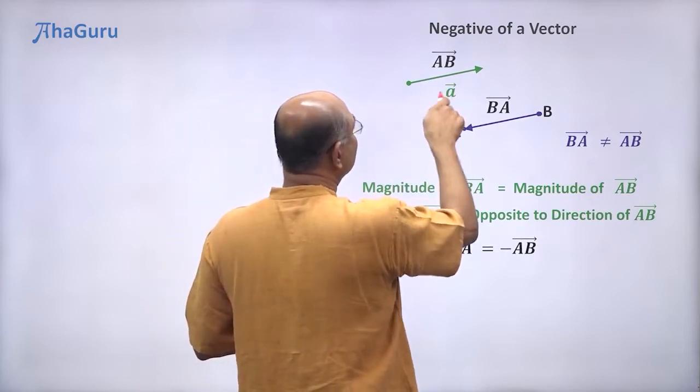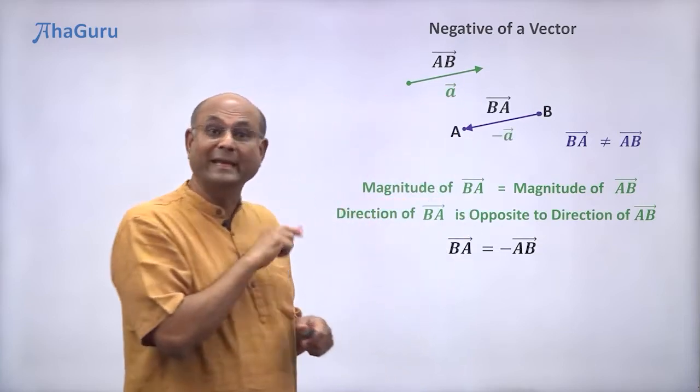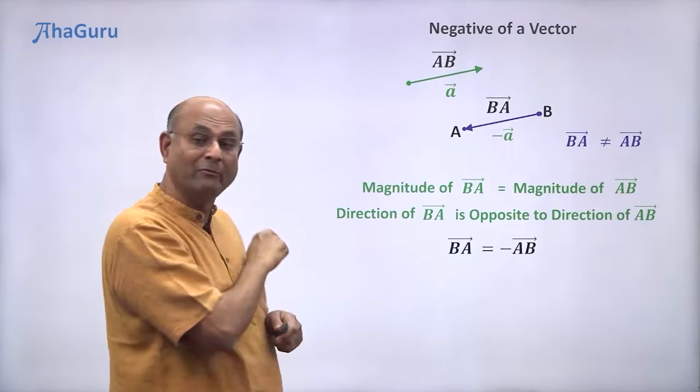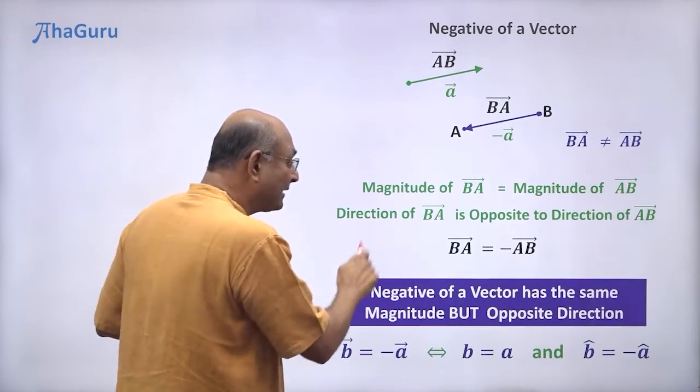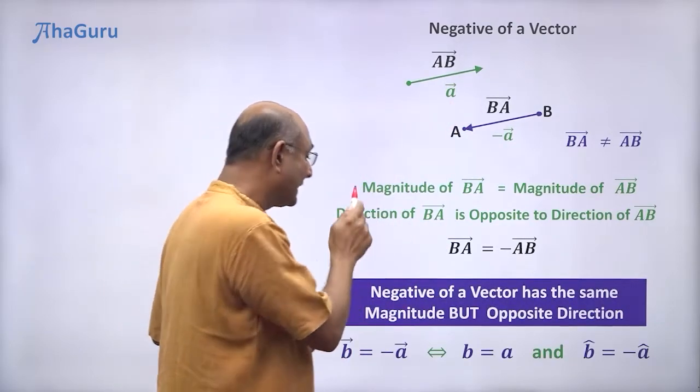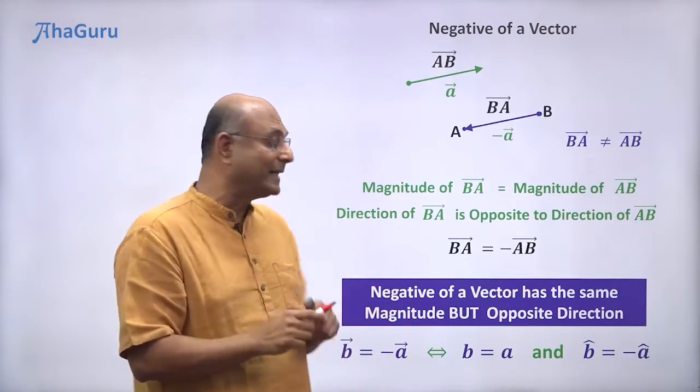So since this is written as A vector, this will be written as minus A vector. And what do we have to understand? Negative of a vector, minus A vector. Negative means it has the same magnitude but opposite direction.